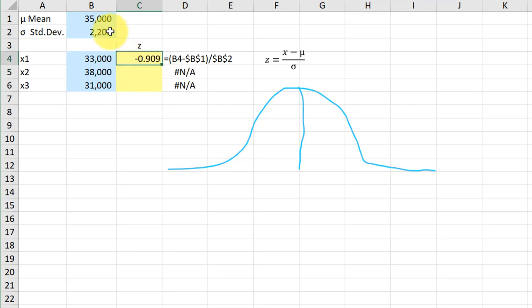Now, because I locked that down, the mean and the standard deviation, I can just drag this down on the other two X values to get the Z values that we need.